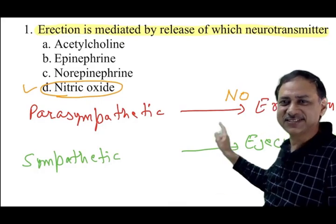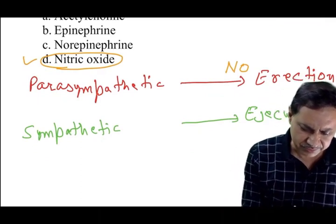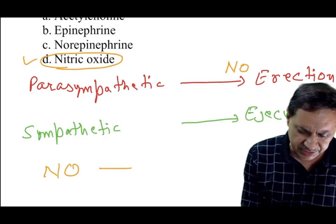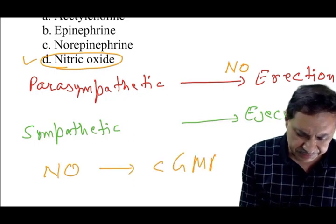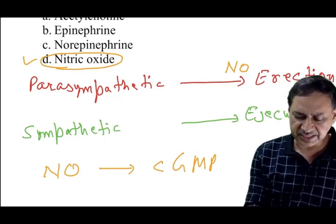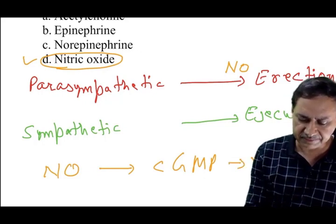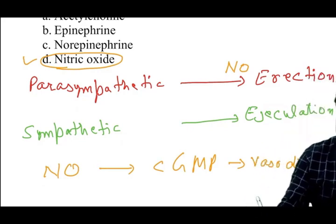This is the new finding. What will this nitric oxide do? If I talk about the nitric oxide, this nitric oxide will lead to the production of cyclic GMP. And cyclic GMP is a vasodilator. It is a vasodilator.